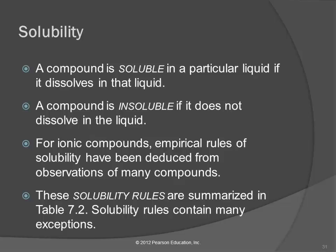How do we know which ionic compounds dissolve and which do not? There are no clues from the periodic table. All of this was determined experimentally — you take some silver chloride, put it in water, and see if it dissolves. Then you try different things, and from that they came up with solubility rules to help us predict whether compounds are soluble or not.